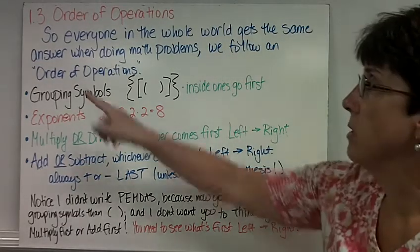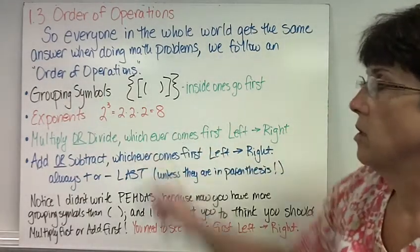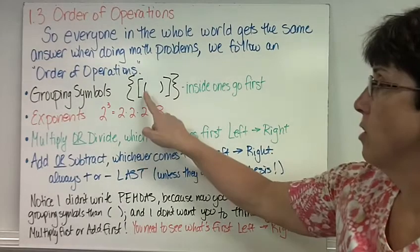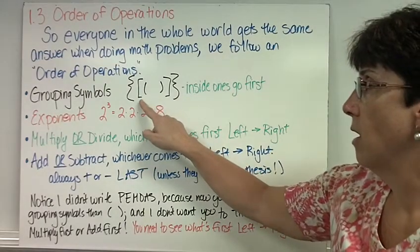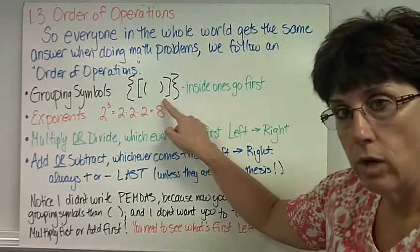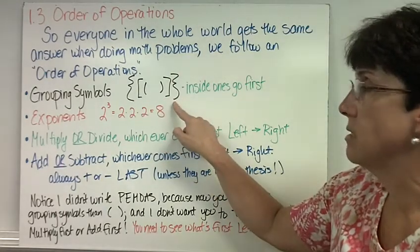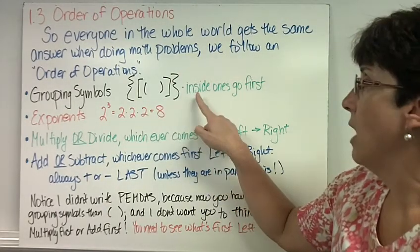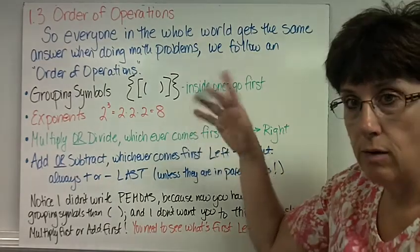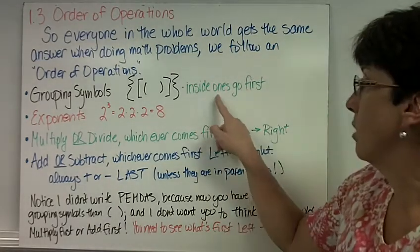The first step is grouping symbols. Grouping symbols consists of parentheses, brackets, which are squared off, and braces, which are the squiggly line ones. And if you have more than one set in a problem, you do the inside ones first.